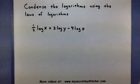So those laws are basically the product rule where we can take two logs that are added and multiply their insides together. There's the quotient rule that says if they're subtracted, we can put their insides divided.